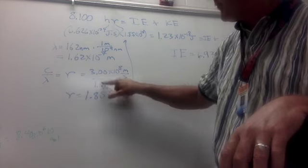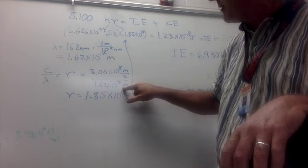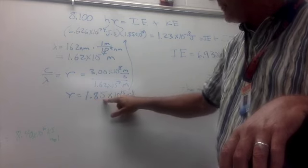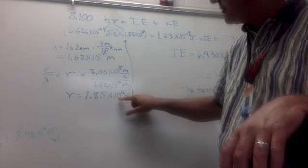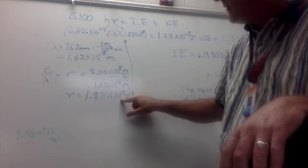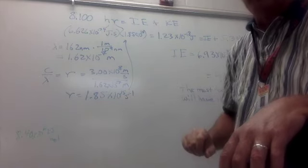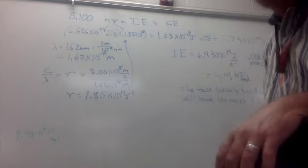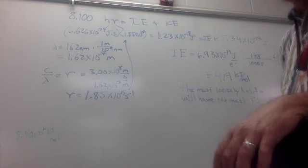Then I divided the speed of light by the wavelength to get the frequency. 3 times 10 to the eighth divided by 1.62 times 10 to the minus seven meters is 1.85 times 10 to the positive 15 seconds to the negative one, or hertz frequency units, seconds to the minus 1, per second.